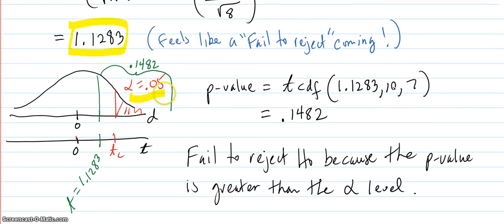We got our alpha 0.05 region. We don't know where our t-value lies yet. So let's just find out. The p-value is the second VARS tcdf. You put in your number.